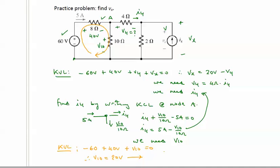So now we can feed that back, and we can calculate. We can solve this to be 5 amps minus 20 volts over 10 ohms, which is 2 amps. So we have 3 amps. And now we can say that this is going to be equal to 4 ohms times 3 amps, or 12 volts. And now we can write Vx is 20 volts minus 12 volts. And so therefore, Vx equals 8 volts. And that is our solution.